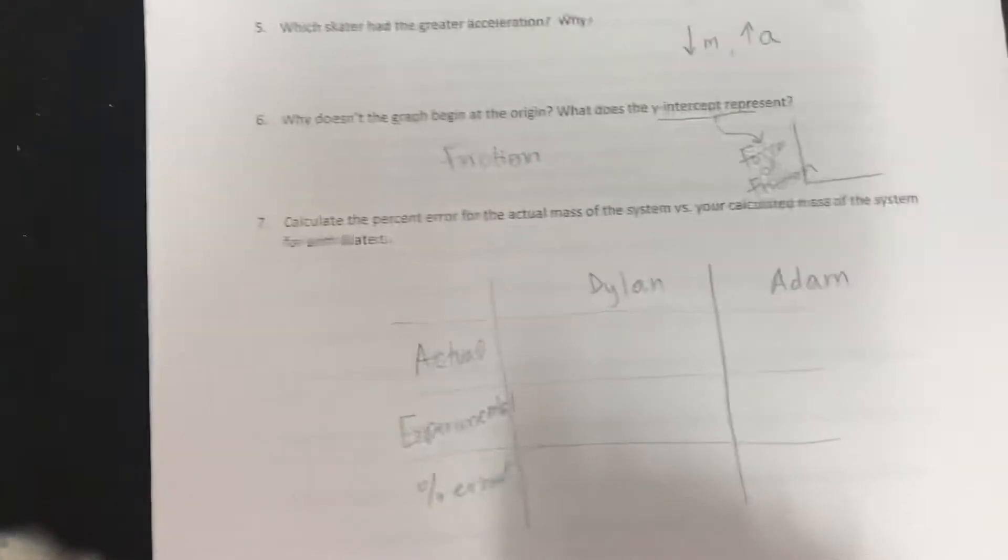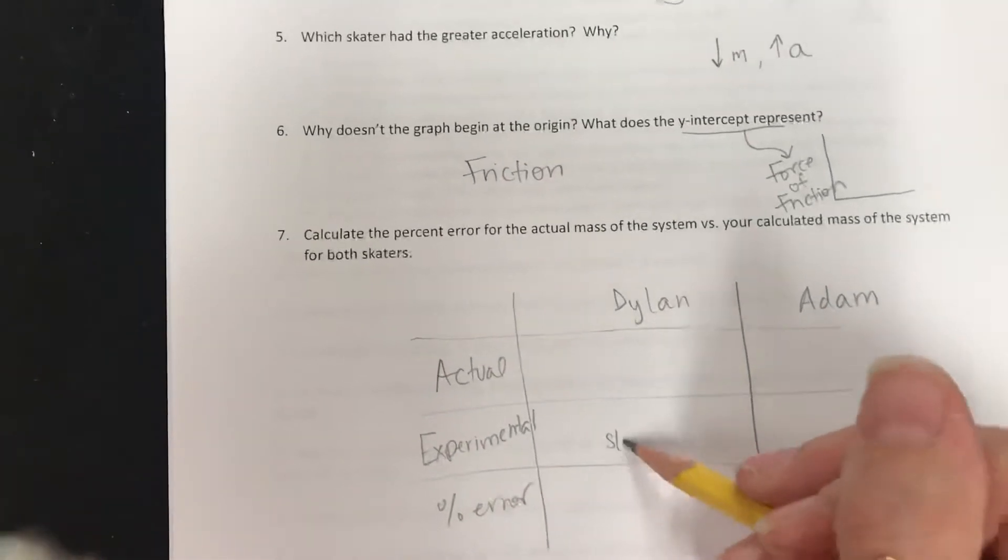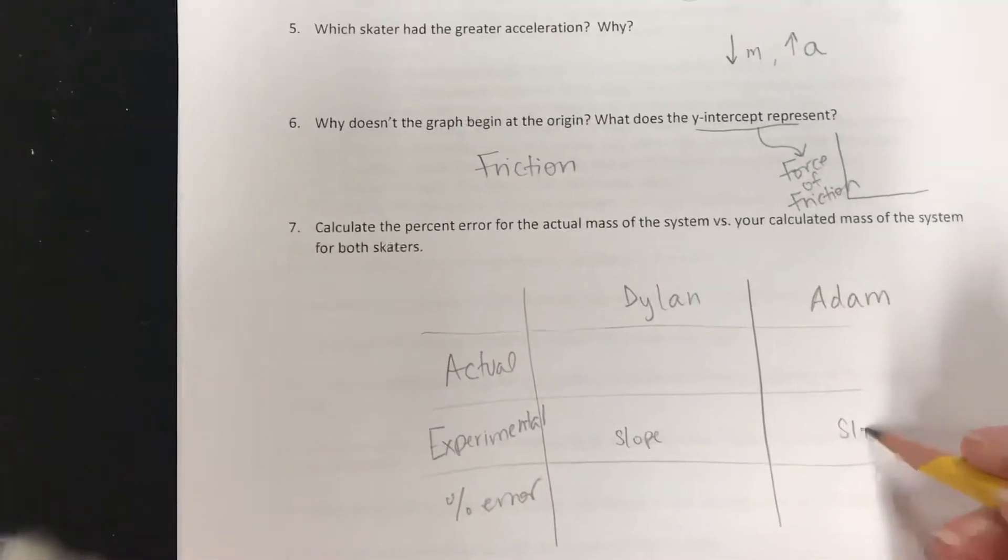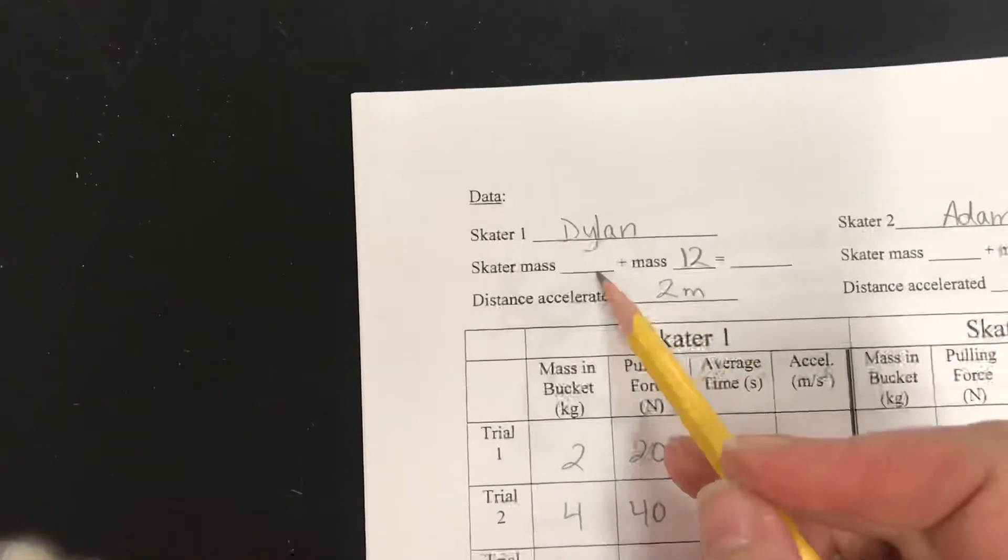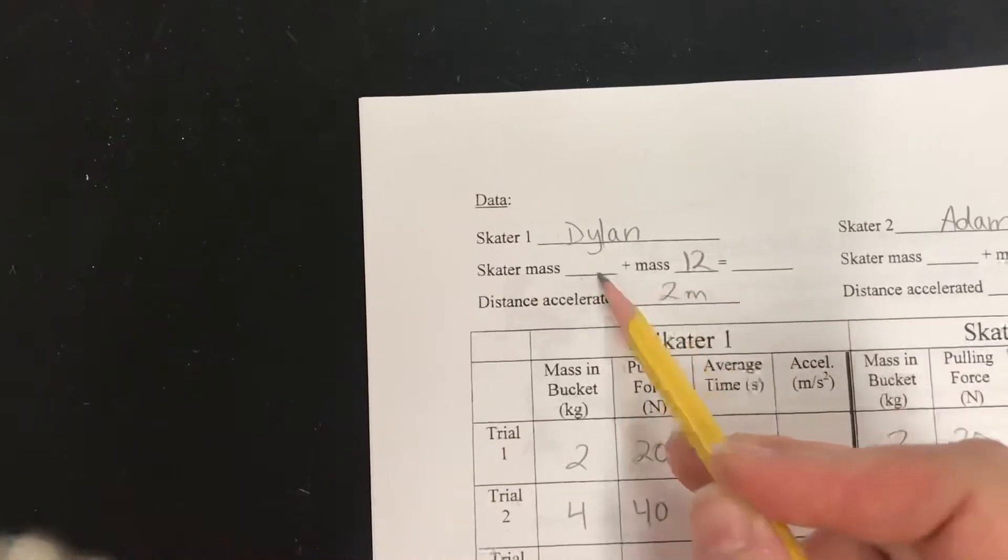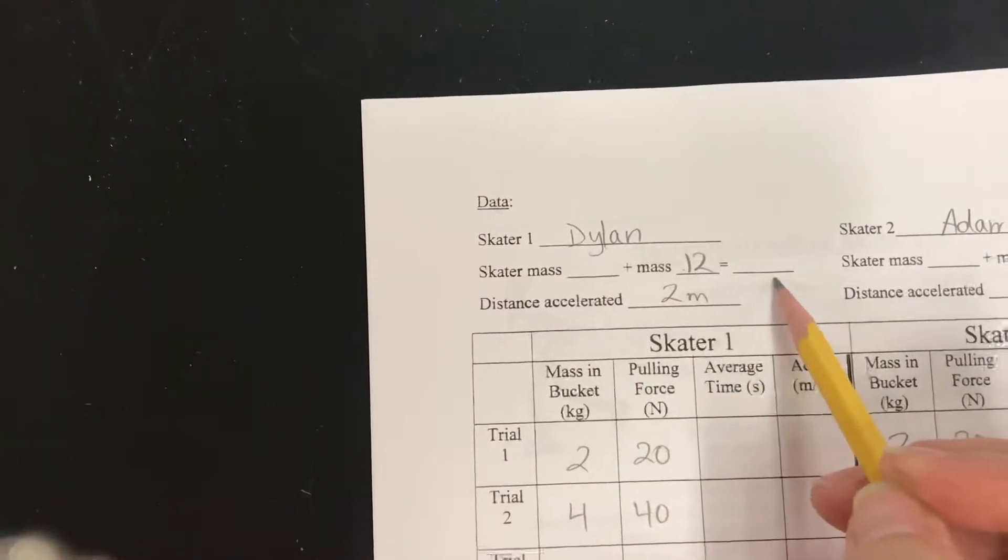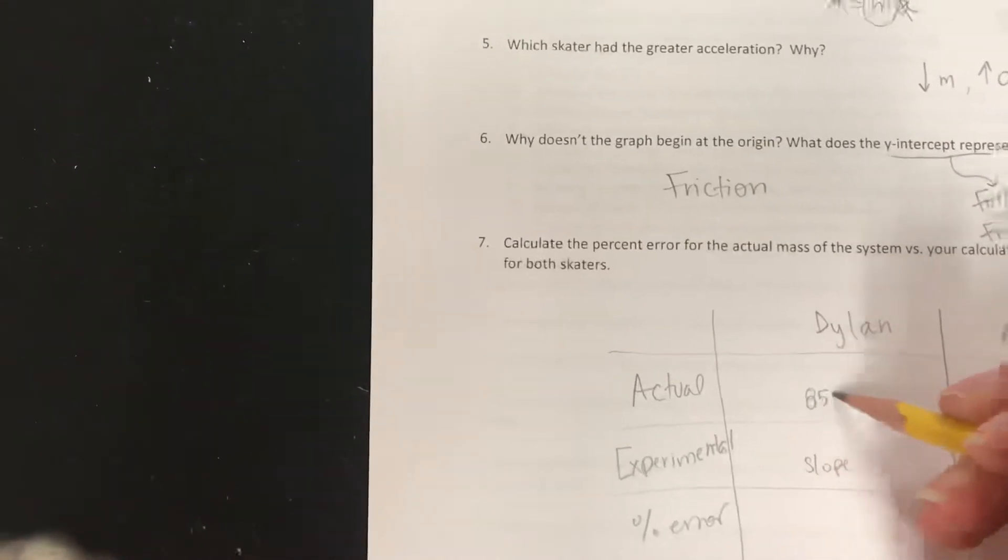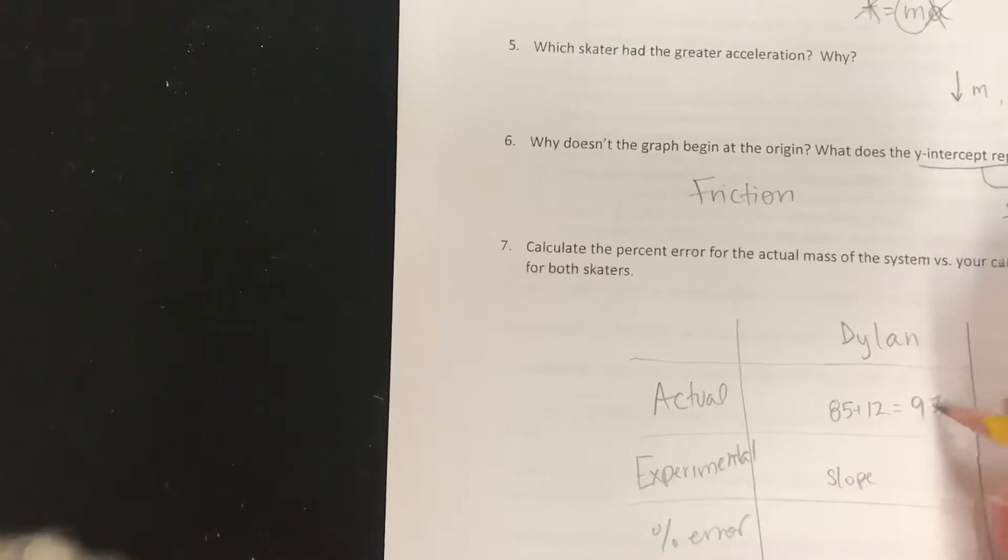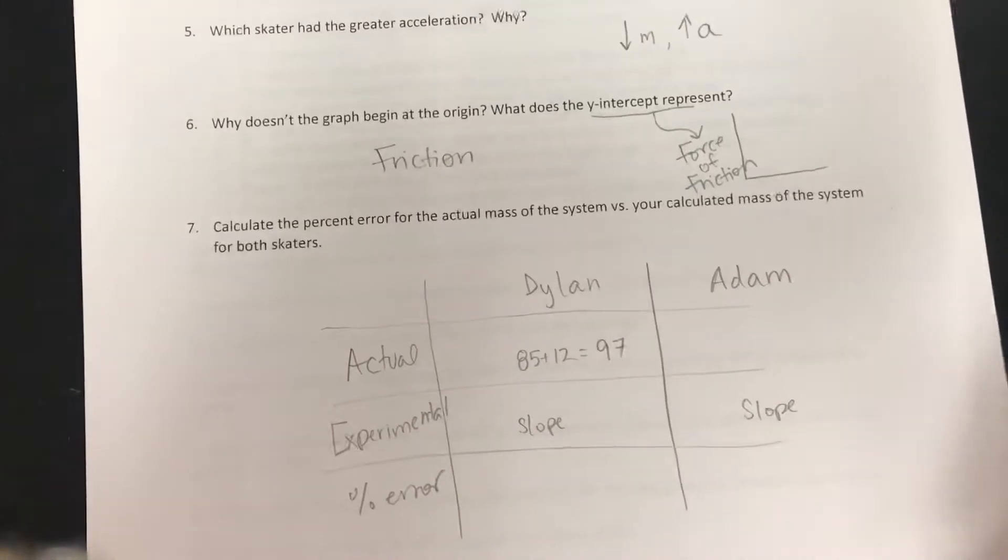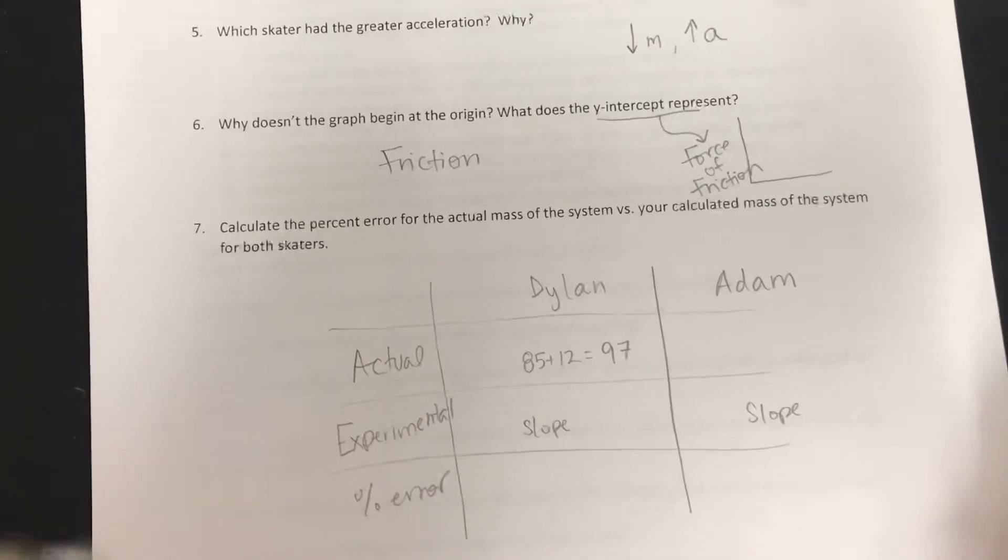Now, the experimental value is what you're going to get from your slope. So we're going to find the slope of each skater. The actual value, your actual value should be these two values together. I think Dylan's was 85, so this would be like 85 plus 12, or his actual value should be 97. Then you're going to find the percent error for each one of those guys. Does that make sense? Wonderful.